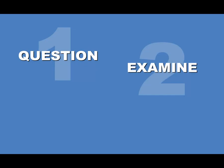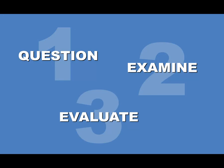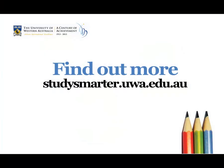Let's recap these three top tips for being a good critical thinker. Remember to ask questions, examine the text closely to see how it's constructed, and lastly, evaluate the text, giving your considered judgement of how effective it is. For more resources on critical thinking, you can go to the Study Smarter website and find Critical Thinking Corner, and many other online resources to help you.